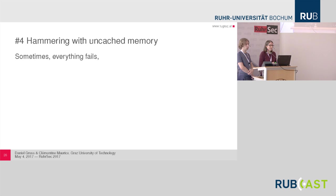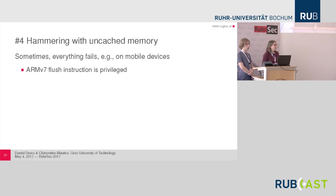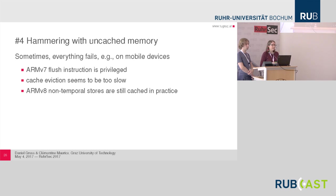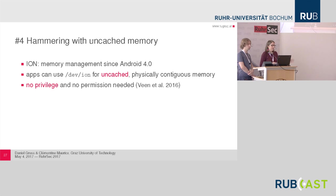The fourth technique is hammering with uncached memory, because sometimes everything else fails — especially on mobile devices. On ARMv7, the flush instruction is privileged so it won't work. Cache eviction was tried a lot but is too slow to get any bit flips. On ARMv8, non-temporal stores are actually still cached in practice. But since Android 4, there is ION — the memory management interface — which apps can use to obtain uncached and physically contiguous memory. It's also not privileged and requires no special permissions. This is what Van der Veen et al. used to have bit flips on Android.